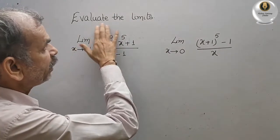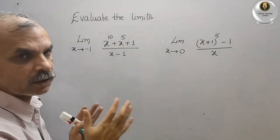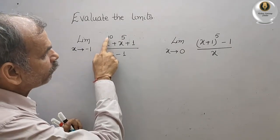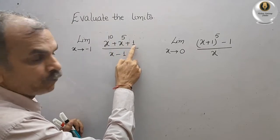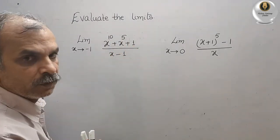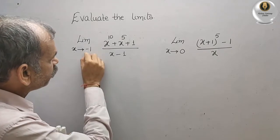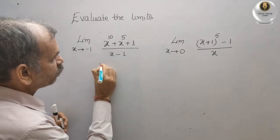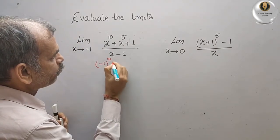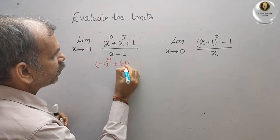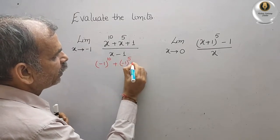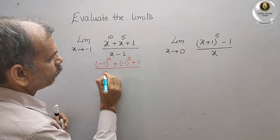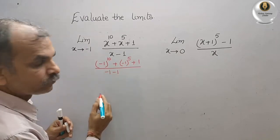The question is to evaluate the limit: as x tends to minus 1, of (x to the power of 10 plus x to the power of 5 plus 1) divided by (x minus 1). First, we will put the value minus 1 in place of x. We will get minus 1 to the power of 10, plus minus 1 to the power of 5, plus 1, divided by minus 1 minus 1.